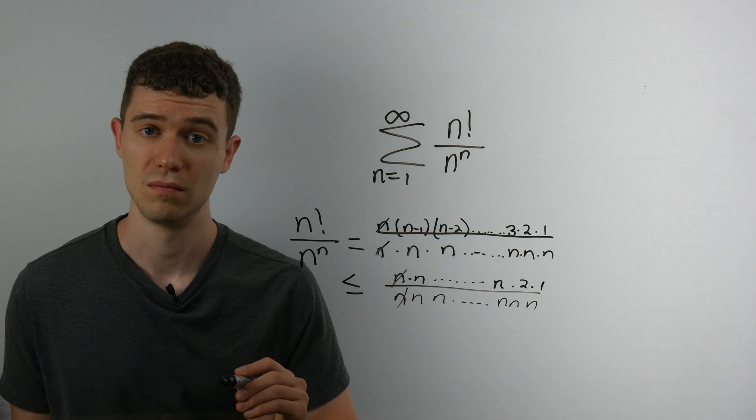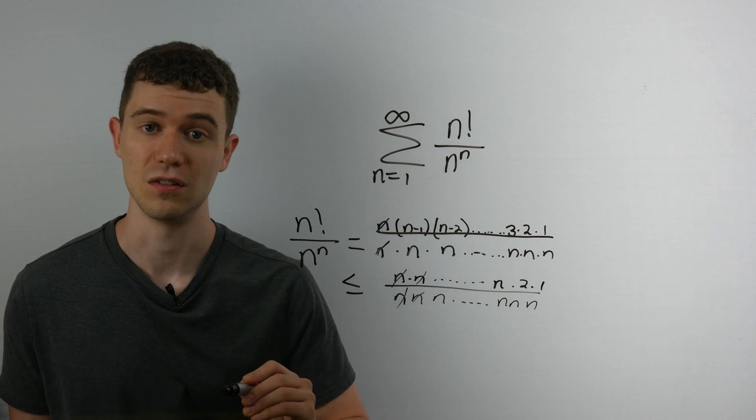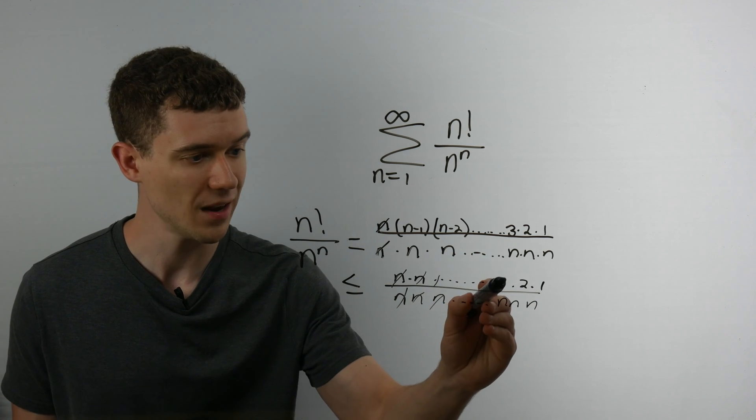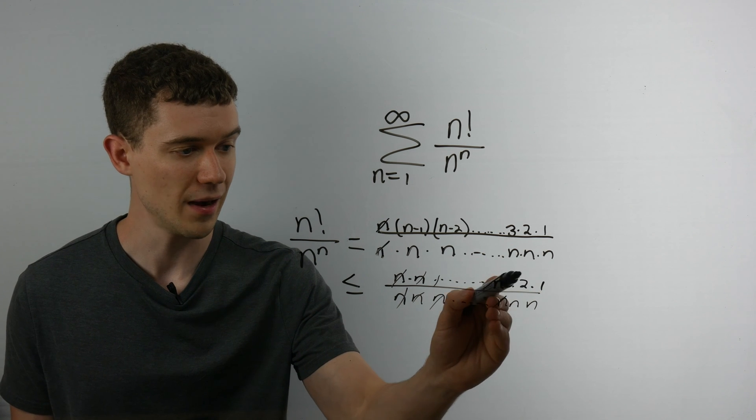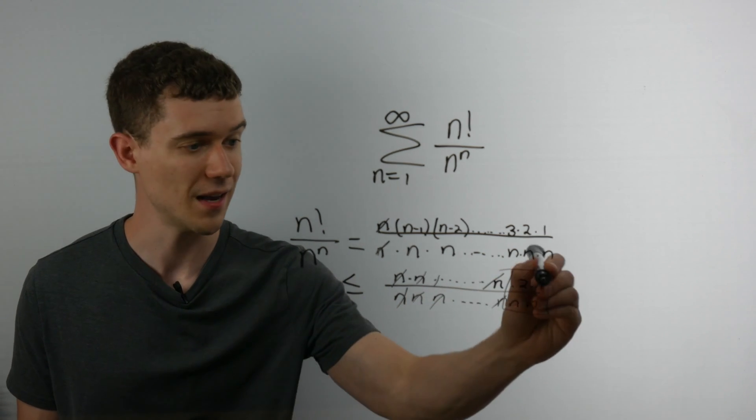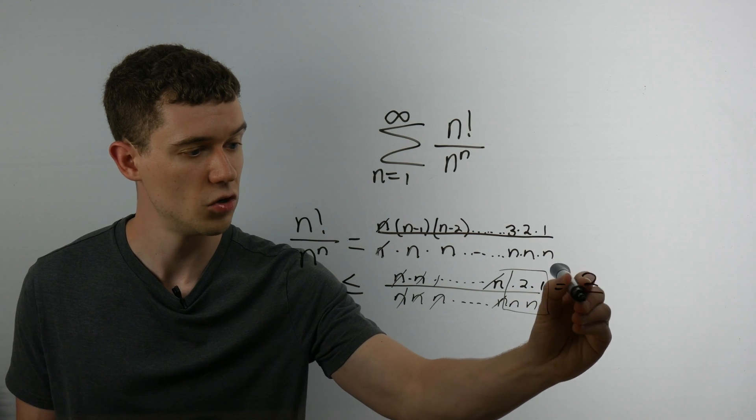Because what happens here? Well, this n and this n cancel. This n and this n cancel. The next n and this n would cancel. In fact, they would cancel all the way down. These n's would cancel and I'll be left with simply 2 times 1 over n times n. You might just call that 2 over n squared.